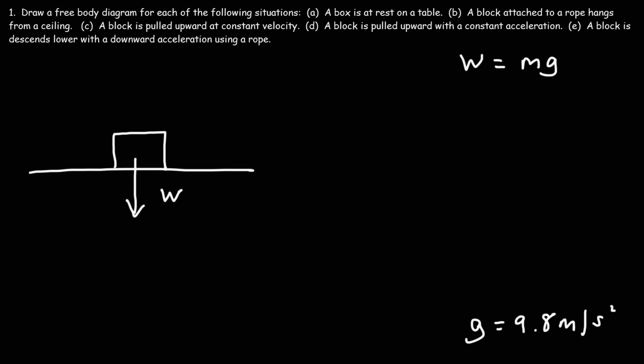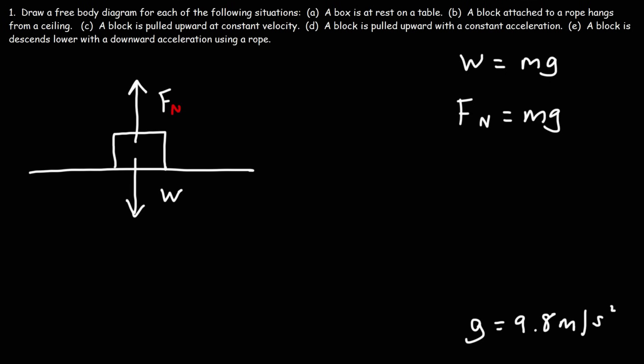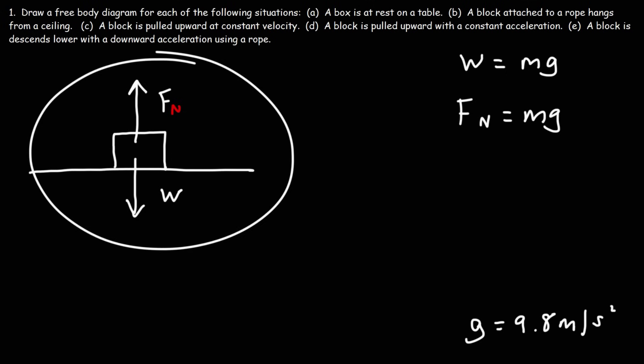The surface also exerts a force, known as the normal force. The normal force is always perpendicular to the surface — it's at a 90-degree angle. Because the box is at rest, the normal force is going to be equal to mg. Because they're equal, you want the length of these two arrows to be approximately the same. So that's the free-body diagram representing the box resting on a table.